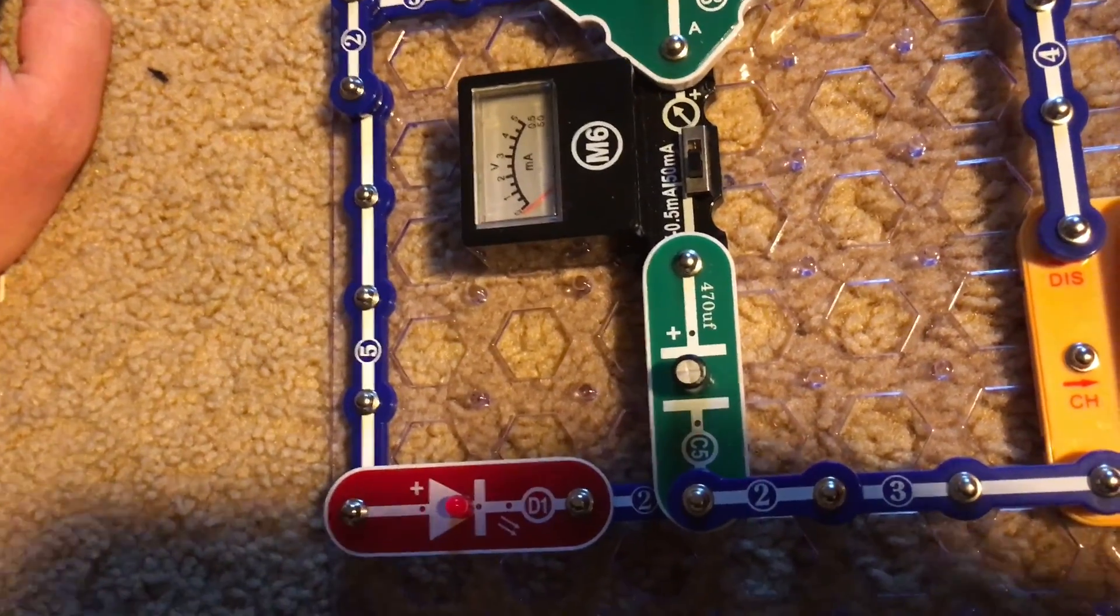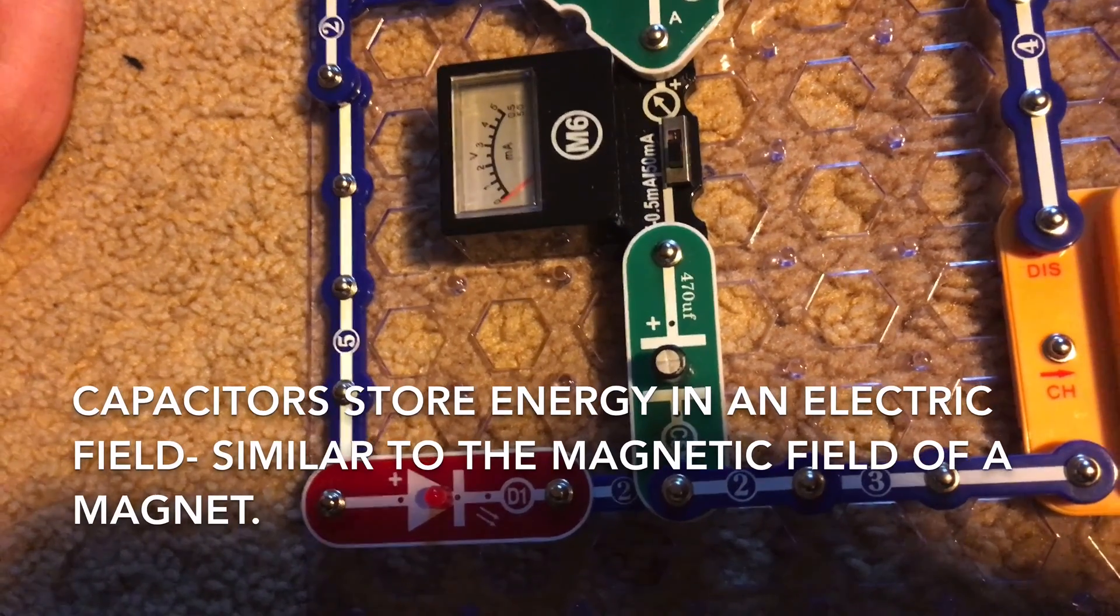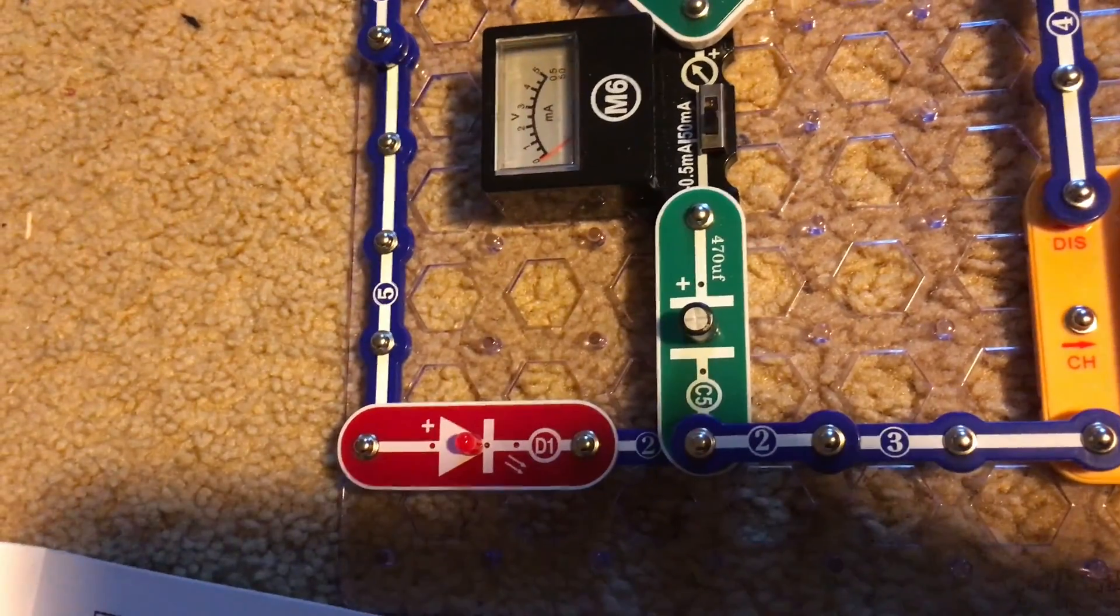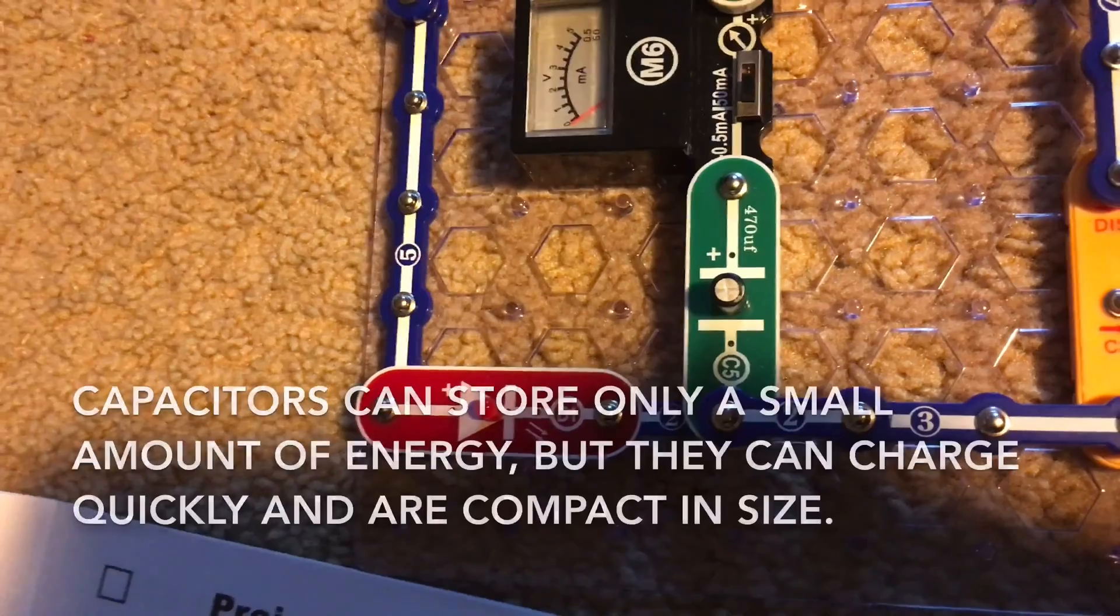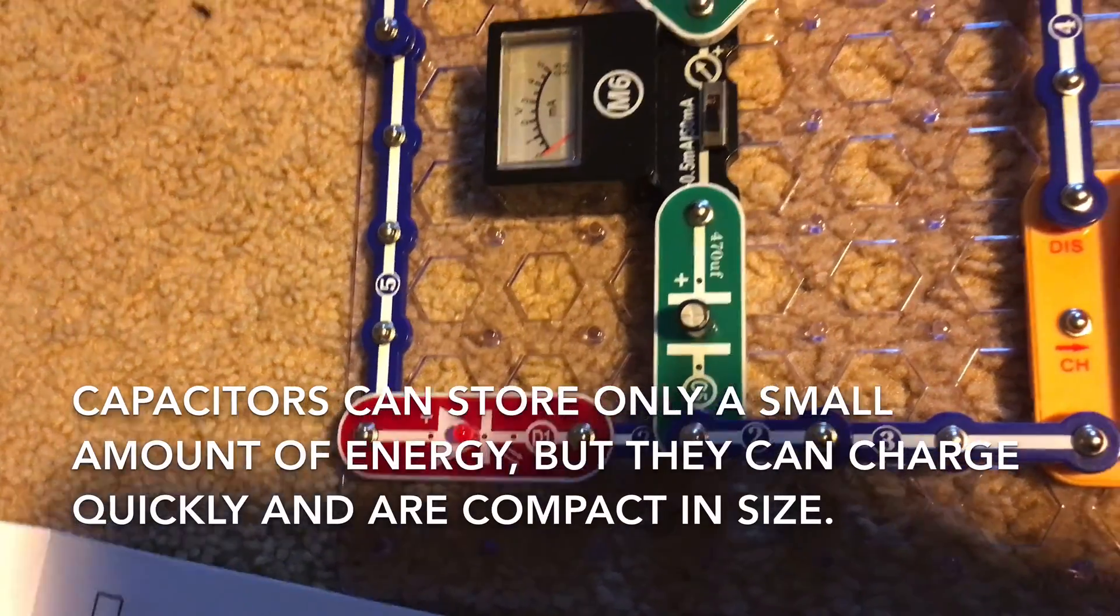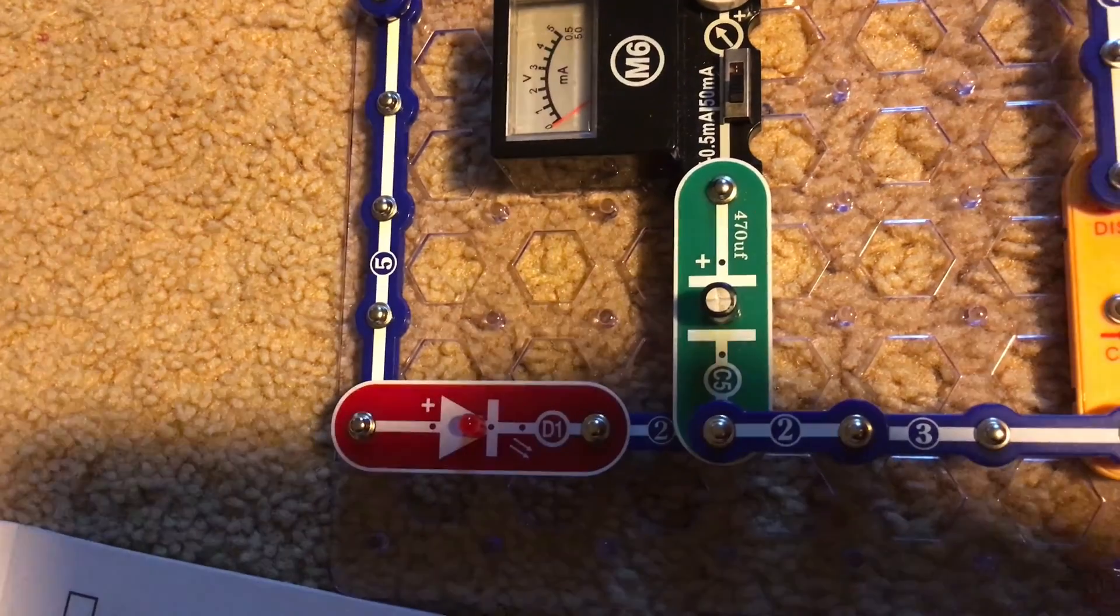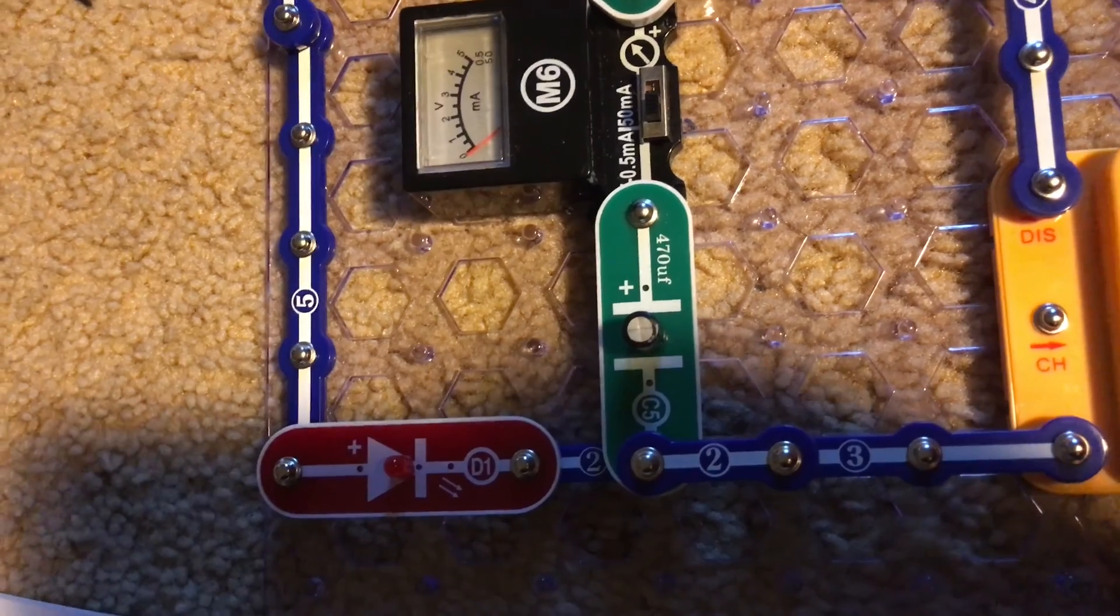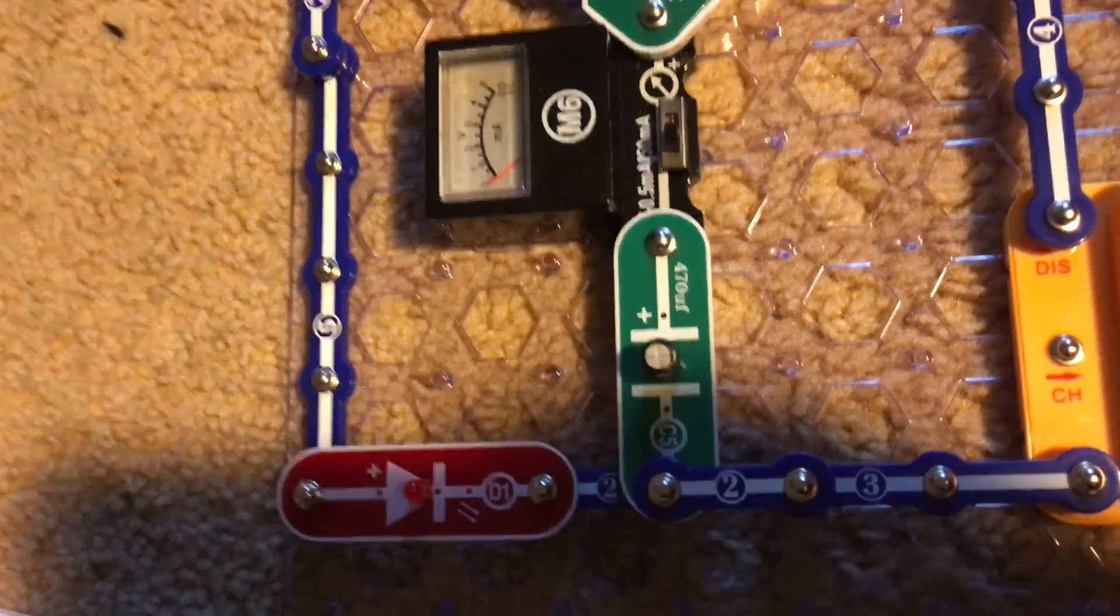Capacitors store energy using an electric field between metal plates similar to how the magnetic field of a magnet works. Although they can only store very small amounts of energy, they can discharge it as well as store it up relatively quickly, and capacitors can also be very small components.